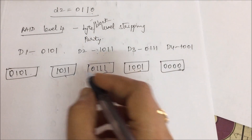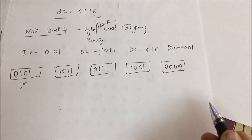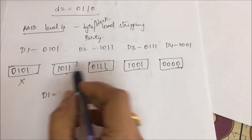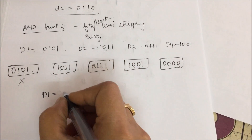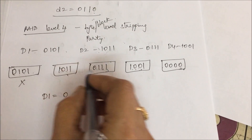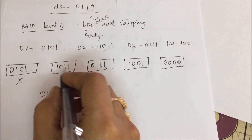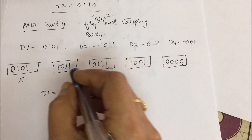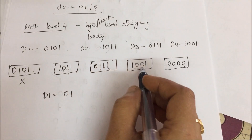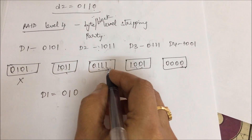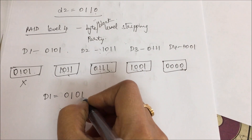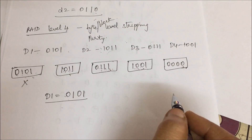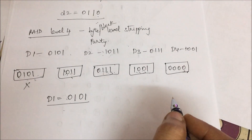Now let us say D1 is lost completely. To recover D1, we use D2, D3, D4 and the parity disk with even parity. Working through each bit: using remaining bits and parity we recover D1 bit by bit — getting 0, 1, 0, 1 — so D1 is recovered as 0101, which matches the original value. This is how RAID level 4 data recovery works.